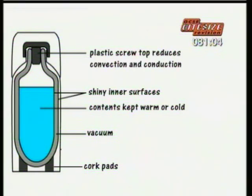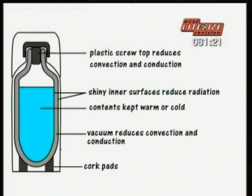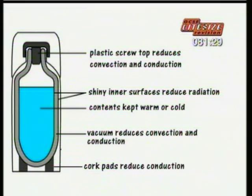The screw top stops convection from hot liquids through the neck of the flask, and the stopper is plastic, a good insulator, so that stops conduction. The inner container has a shiny surface to reduce heat loss or heat gain by radiation. There's also a vacuum between the two skins of the inner flask — that stops heat travelling by convection and conduction. The cork pad supporting the inner flask is a good insulator, so it reduces conduction.